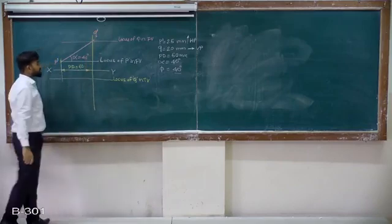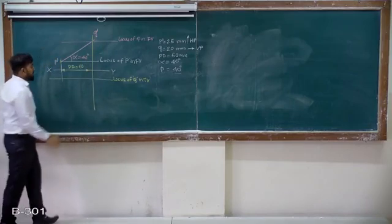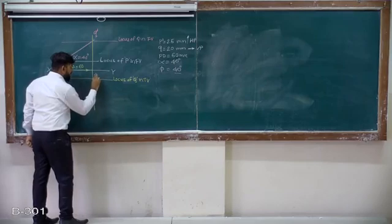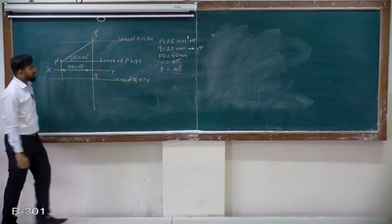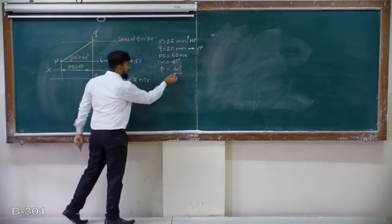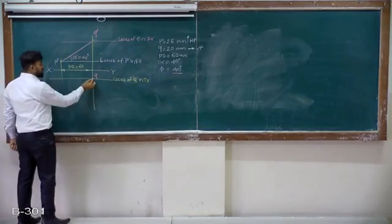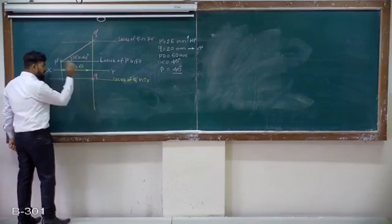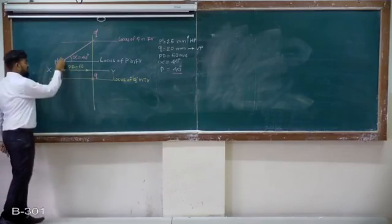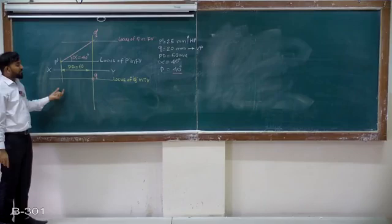This is locus of Q, so this point becomes Q. Now last condition: line is inclined to VP at angle 40 degrees. This point is Q and this is the projector of P. How will we get the true length?